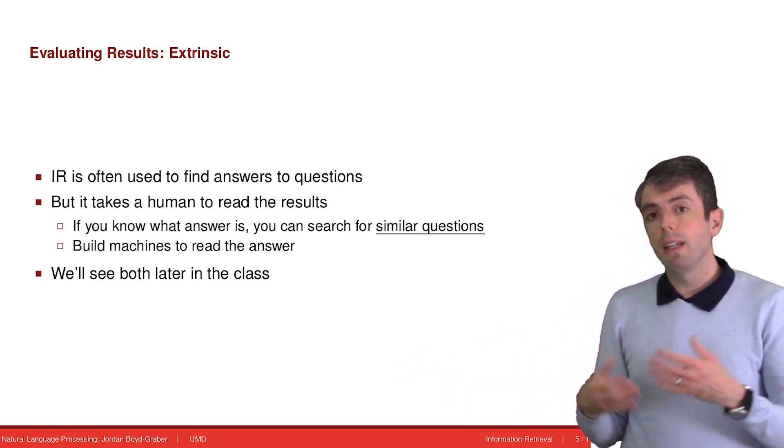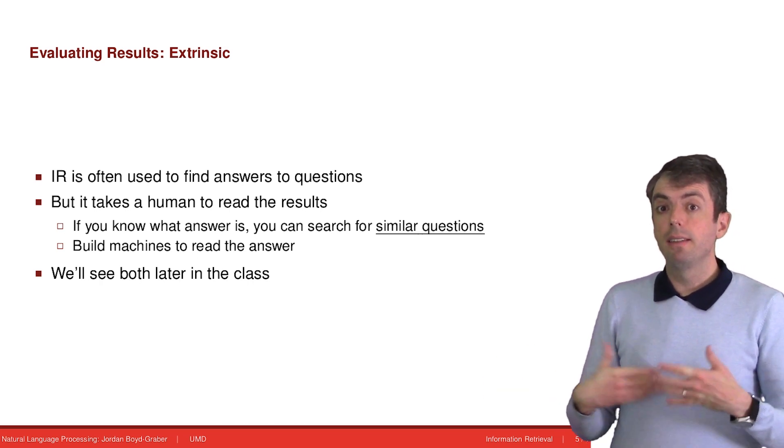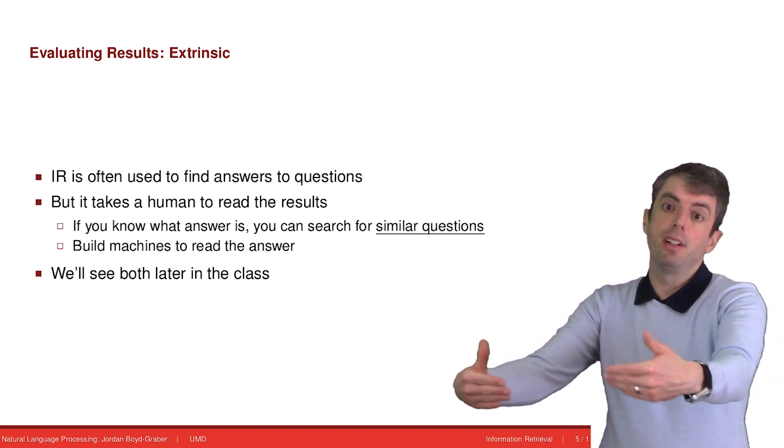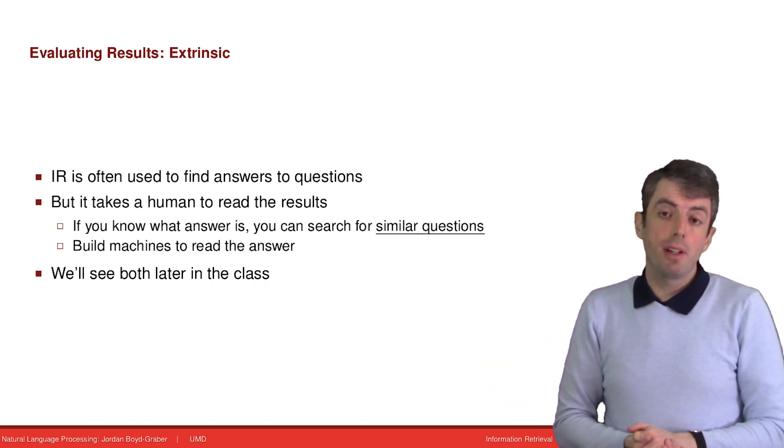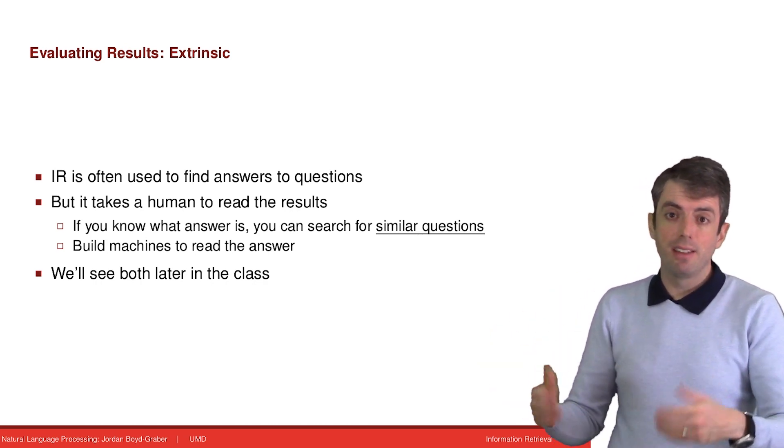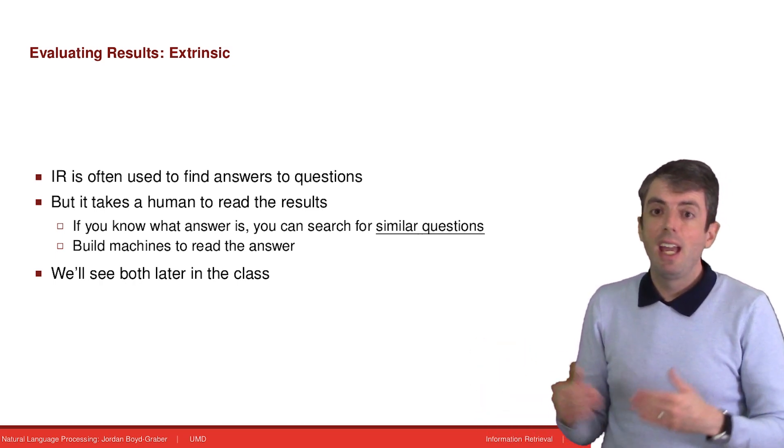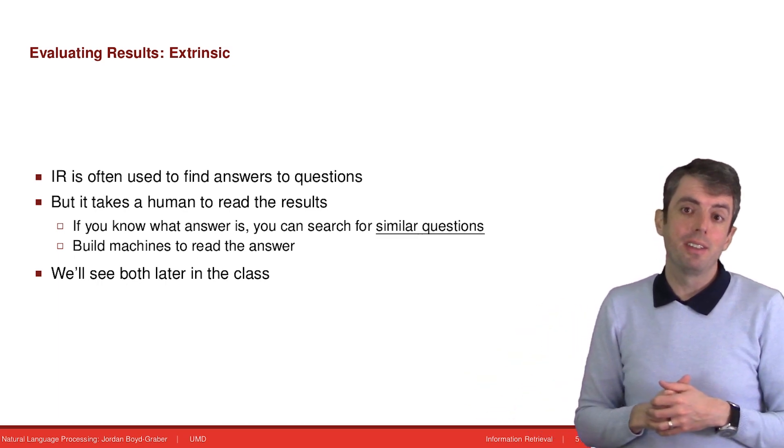We can then evaluate how good our information retrieval system is based on whether the question-answering system that comes after our information retrieval system, how well does it answer questions? We can do things like look at the accuracy of the question-answering system. If we get high accuracy, then our information retrieval system was doing better.